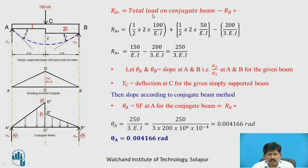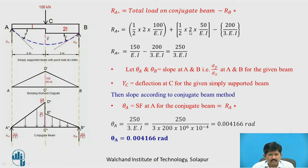RA equals total load on conjugate beam minus RB. Total load equals one-half base 2 into height 100 upon EI, plus one-half base 2 into 50 upon EI, minus RB of 200 divided by 3EI. Solving, RA equals 250 divided by 3EI.